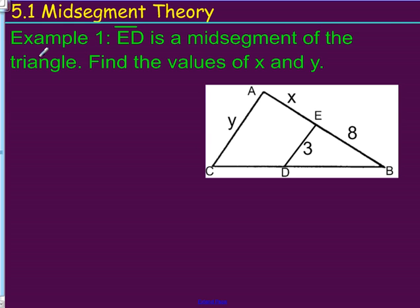So, it says example 1, ED is a mid-segment of the triangle. Find the values of X and Y. Well, we should easily be able to figure out what X is, because we know that mid-segments chop the side of the triangle equally in half.